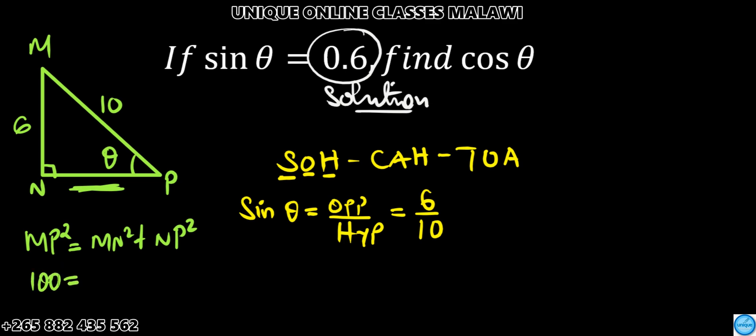Using Pythagorean theorem, MP² = MN² + NP². So MP, that's 100 because it's 10 squared, is equal to MN, it's 6 squared, that's 36, plus NP².